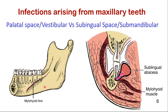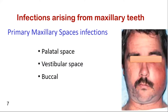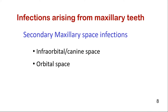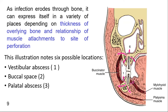This will be explained in our next video about infections arising from the mandibular teeth. Primary spaces are the facial spaces that could be directly affected by odontogenic infections, and they include the palatal space, vestibular space, and buccal space.